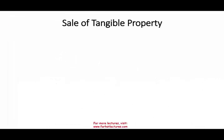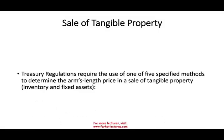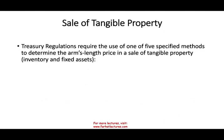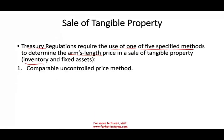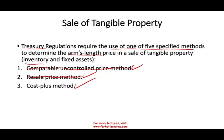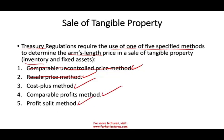The prerequisite for this topic is in the description. We're going to be looking at the Sale of Tangible Property, based on the Treasury regulation that requires the use of one of five specified methods to determine an arm's length price in a sale of tangible property — either inventory or fixed assets between related parties. The five methods are: comparable uncontrolled price, resale price, cost plus, comparable profit, and profit split.